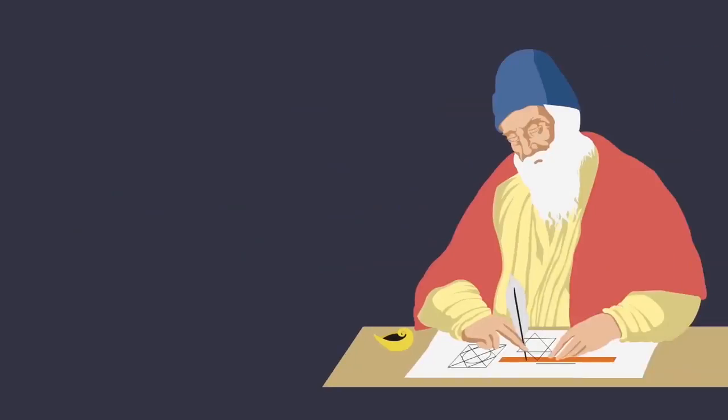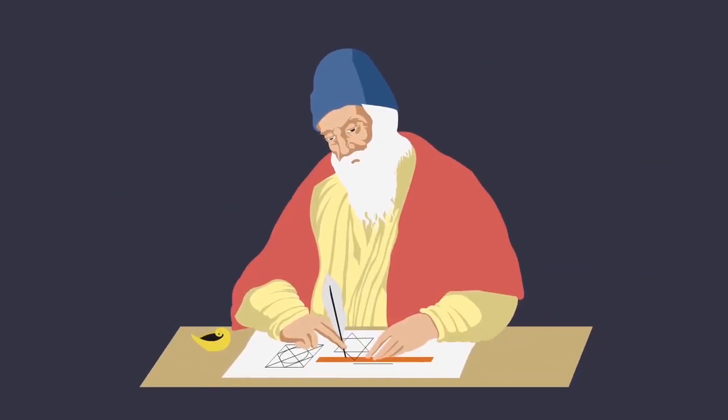Euclid listed 23 definitions in book 1 of the Elements. Few of Euclid's definitions, also called axioms.